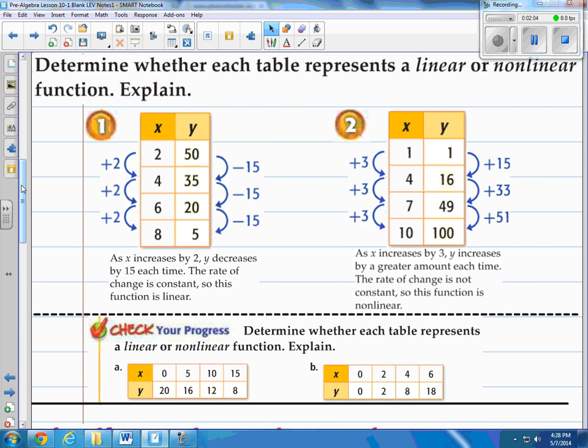Looking at this first one, I notice that the X values are going up by 5 while the Y values are going down by 4. So I would say that has a constant rate of change, therefore it is linear.